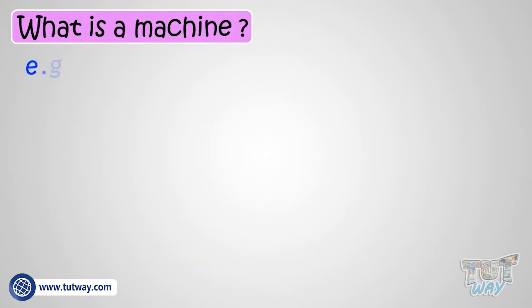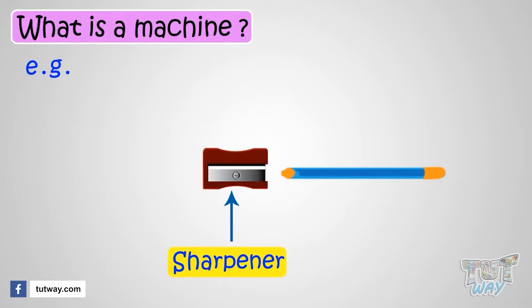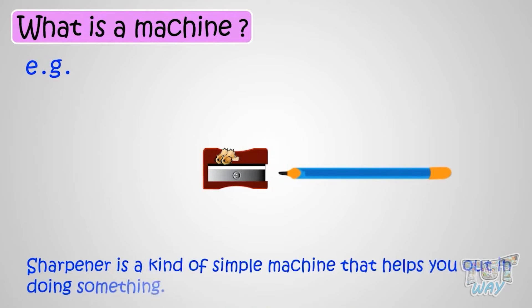For example, if your pencil is blunt and you want to sharpen it, you will use a simple structure: a sharpener. It will make it easy to sharpen it. So a sharpener is a kind of simple machine that helps you out in doing something.